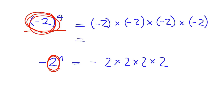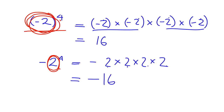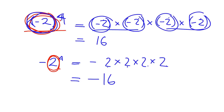For the brackets version: negative times negative is positive, negative times negative is positive, so the whole thing will be positive — and 2 times 2 is 4, times 2 is 8, times 2 is 16. You get positive 16. For the other one, only the 2 gets multiplied: 2 times 2 is 4, times 2 is 8, times 2 is 16 — but it's negative 16. So when it's inside brackets, the whole negative 2 gets raised to the power; when the power is just with the 2, only the 2 gets raised.